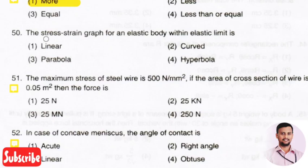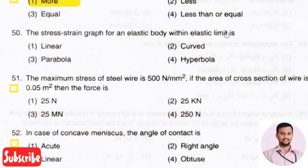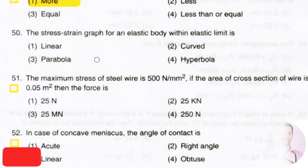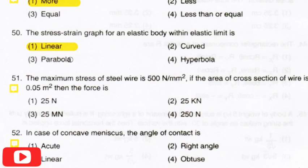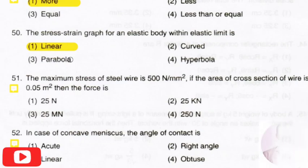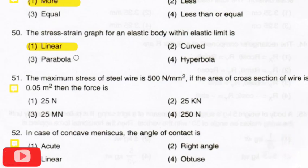The next question: the stress-strain graph for an elastic body within the elastic limit is? The right answer is option 1, that is linear. Within the elastic limit, stress is directly proportional to strain, so the graph varies linearly.